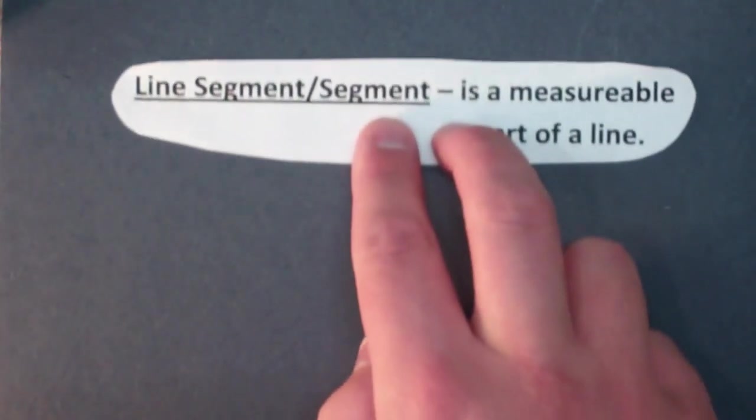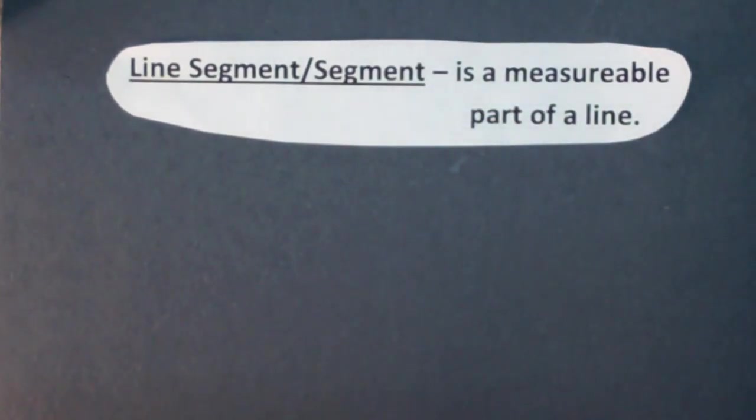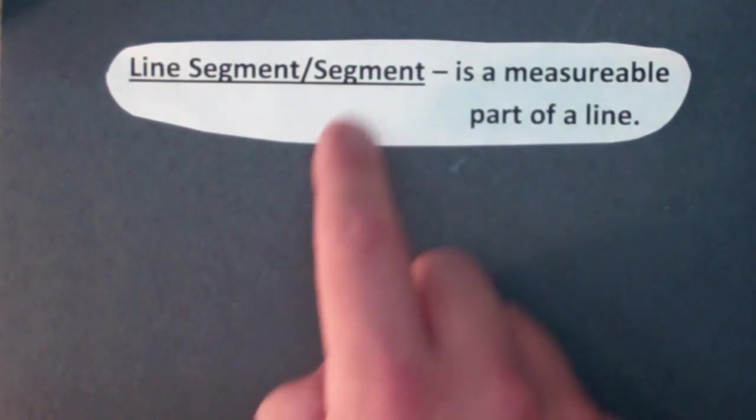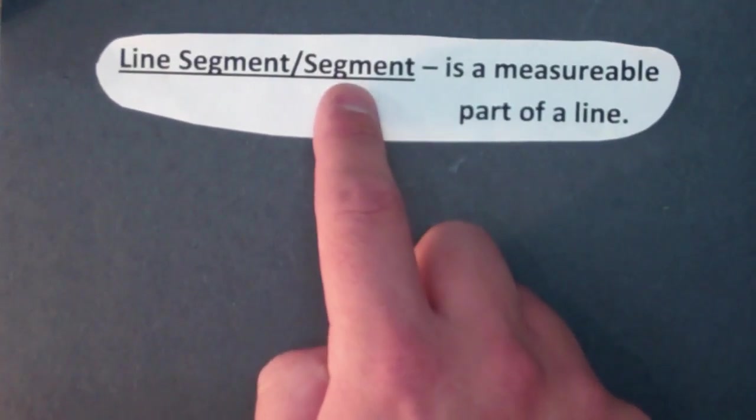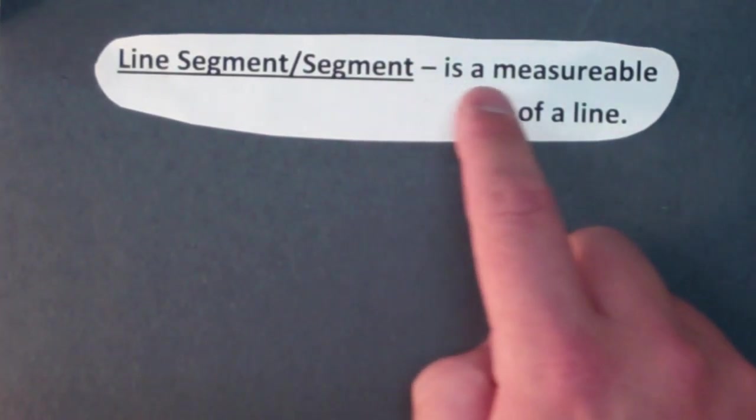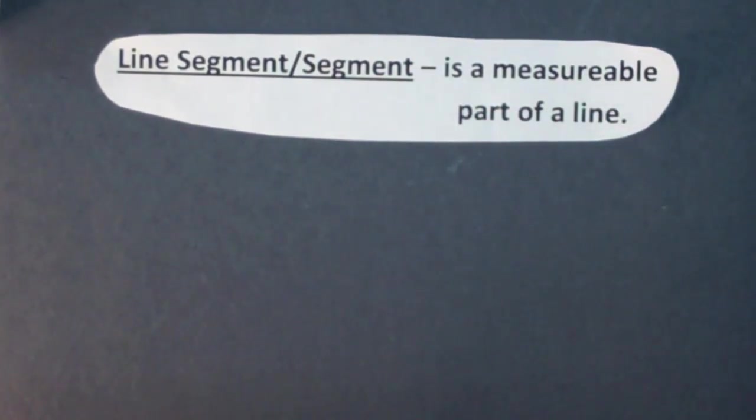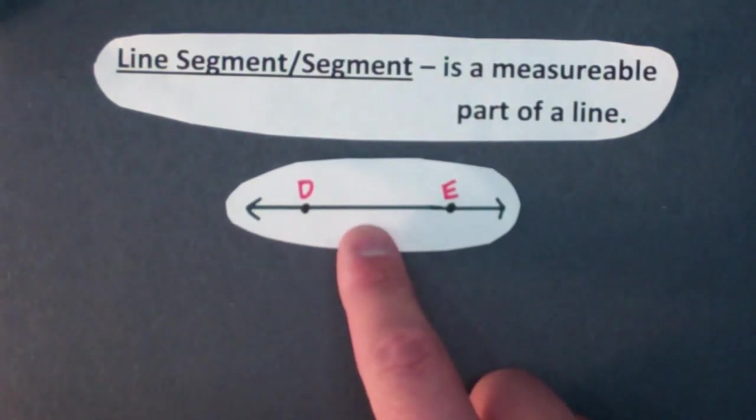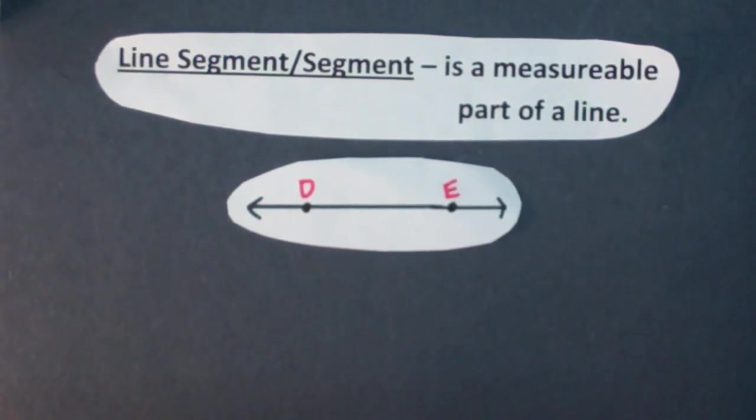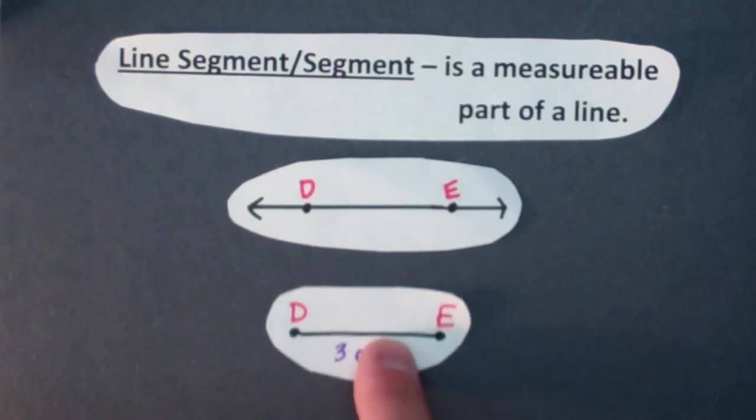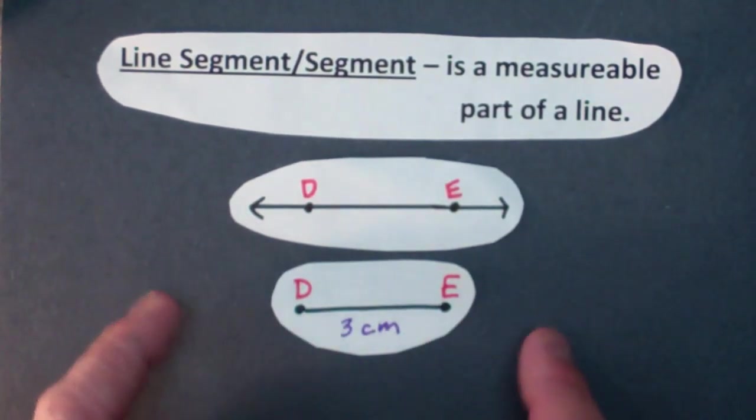So I'm going to move on now to line segment or segment. You can use either one of these. Generally segment's going to be used just because it's easier to write down. But segment or line segment is a measurable part of a line. So let's say I've got another line here. This is line DE and I want to find a line segment in there. Well I'm just going to focus on those two end points and nothing beyond that.